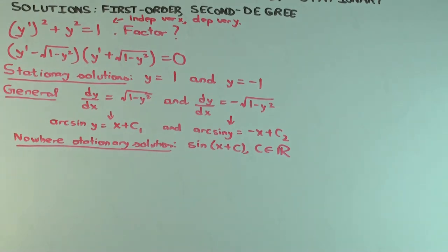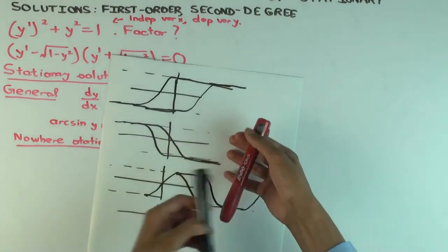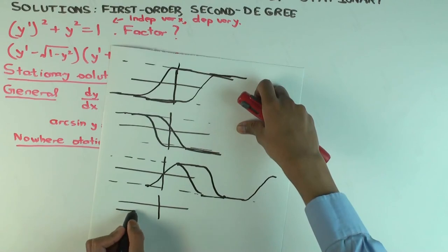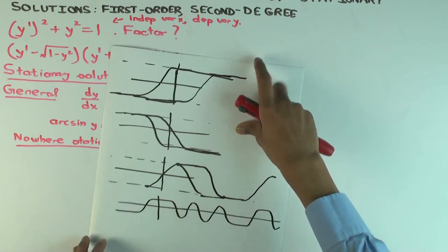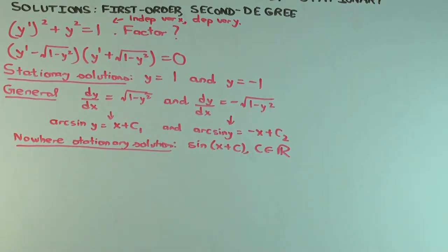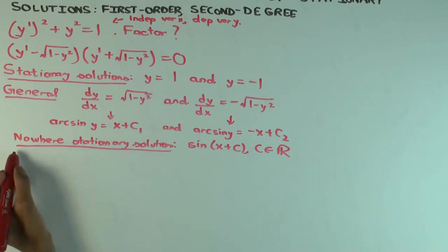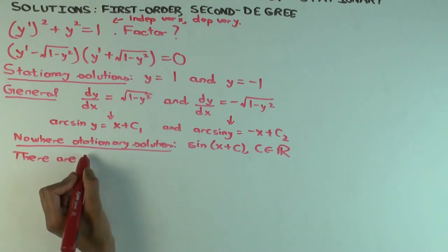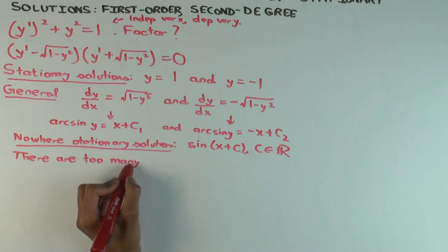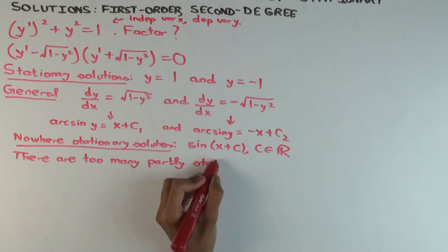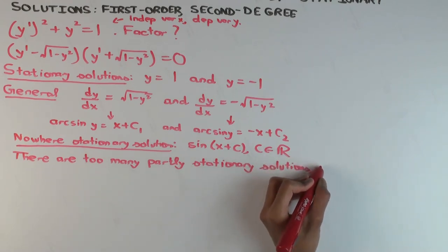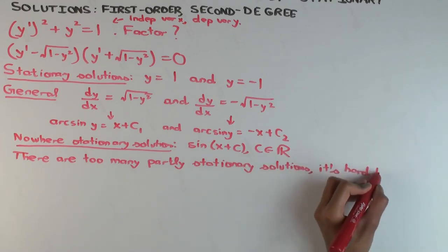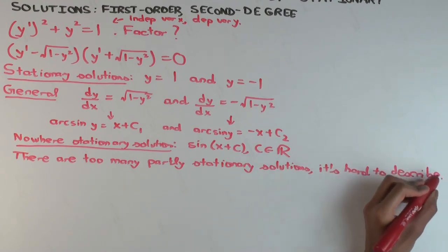But if you allow the solution to be partly stationary, you could get lots of solutions. You could have a solution that started off, went up, stayed like that, then went down, then went up and down regularly for a while, stayed down. You could do lots of things. There are just too many partly stationary solutions. It's hard to even write down explicitly what the family is because there's infinitely many parameters you have to fix.